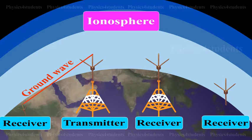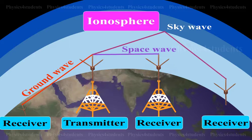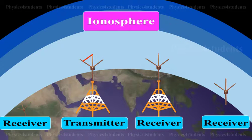A radio wave is propagated from the transmitting to the receiving antenna mainly in three different ways, depending on the frequency of the wave. They are: ground wave propagation,